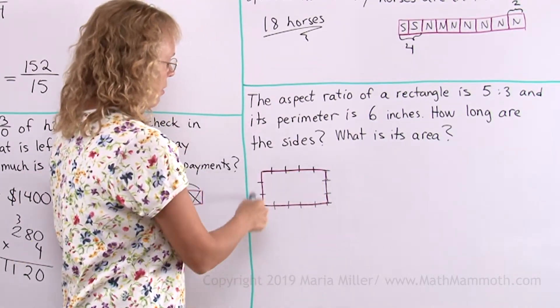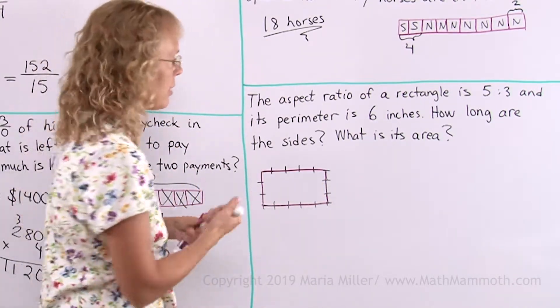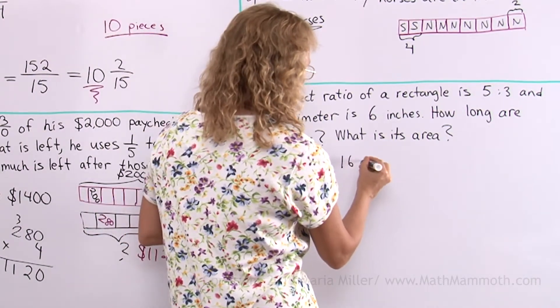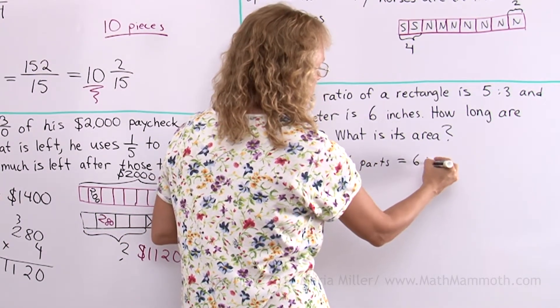5 parts, 3 and 5 and 3. A total of 16 parts. So, 16 parts equals the perimeter 6 inches.